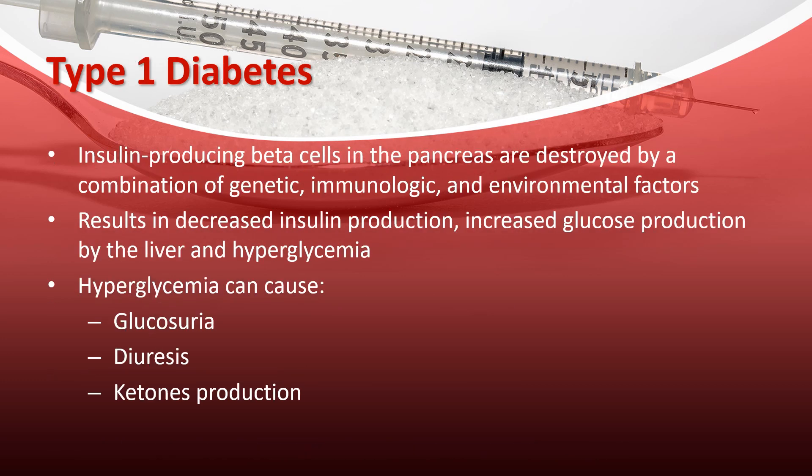Now let's talk about type 1 diabetes. Type 1 diabetes is more common in young people, usually less than 17 years old, which is why we used to call it juvenile diabetes. In type 1 diabetes, all of the beta cells in the pancreas have been destroyed and do not work at all anymore. This can be caused by genetics, immunological issues, and environmental factors like viruses. Diabetes itself is not genetic, but there does seem to be some genetic susceptibility or predisposition that makes some people more likely to develop type 1 diabetes.